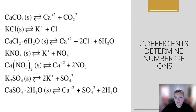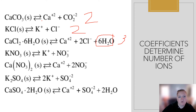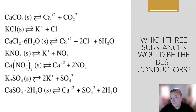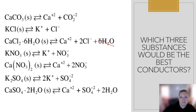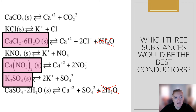To determine which substance would be the best conductor, you need the most ions. Find the number of ions from the coefficients in the dissociation equation. For example: one and one gives two ions; one and two gives three ions — but remember to ignore water since it is not an ion. The substances with the most ions — those with three — would be the best conductors.